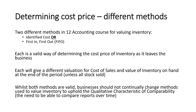So how do we actually determine these cost prices, and how do we know which one to use? There are a couple of different methods, and in Year 12 Accounting we're going to look at two. The first one is identified costs, and the second one is FIFO, or first in, first out. You're probably familiar with a bit of this from Year 11 Accounting.